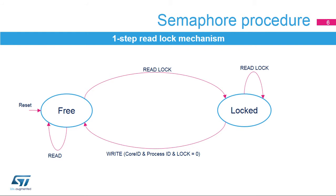If the core ID doesn't match or the process ID is different from 0x0000, the semaphore has been locked by another CPU or process. A locked semaphore can only be unlocked by writing the lock bit to 0 with the corresponding core ID and process ID. The two-step and one-step lock procedures can be used concurrently. In this case, the two-step lock procedure must not use process ID value 0x0000.